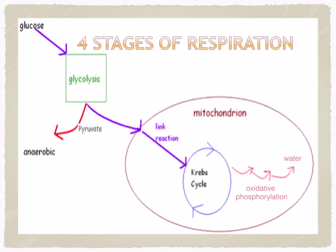To summarize the locations of the four stages: glycolysis occurs in the cytoplasm. The pyruvate then moves via the link reaction into the mitochondrion, where the link reaction, Krebs cycle, and oxidative phosphorylation all take place.